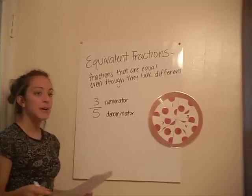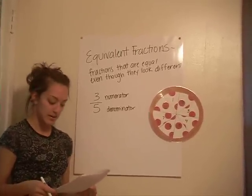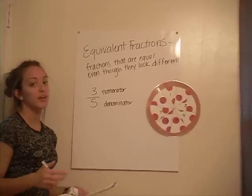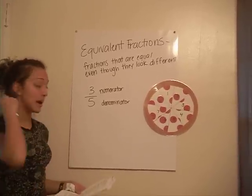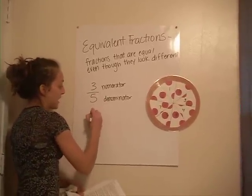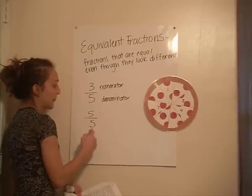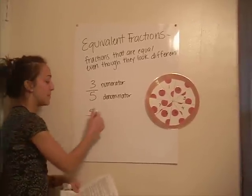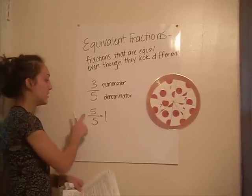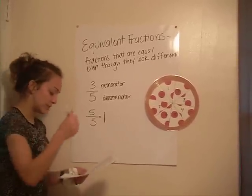Who can tell me how to write a whole as a fraction? The denominator and numerator are the same number when you write a whole as a fraction. So if I write 5 out of 5 — if the number is the same on the top and the bottom — remember that that's equal to 1. If it's the same number on top and bottom, it's equal to 1.